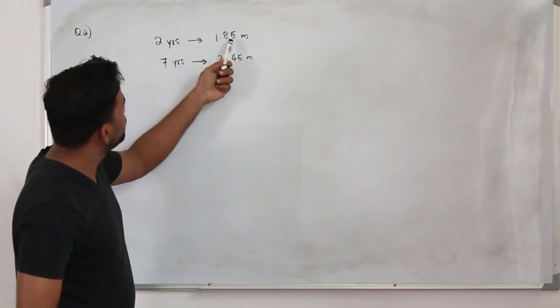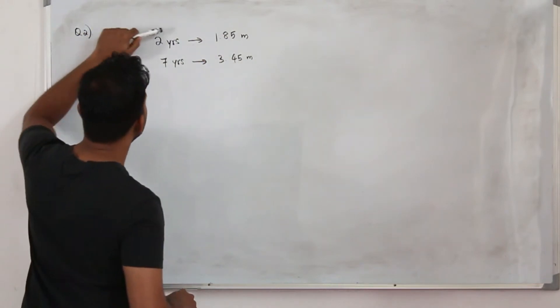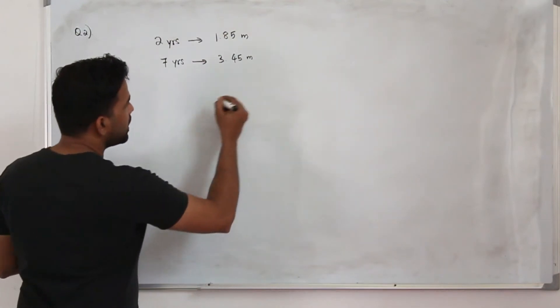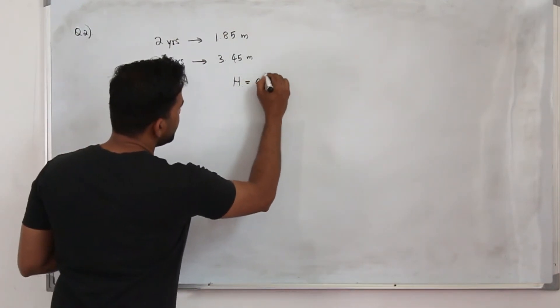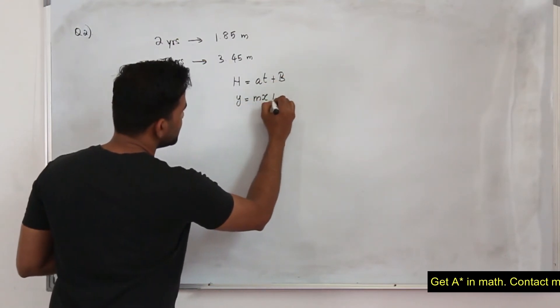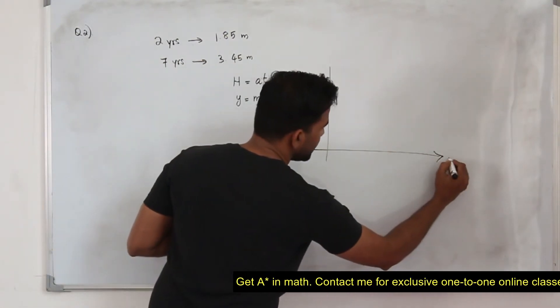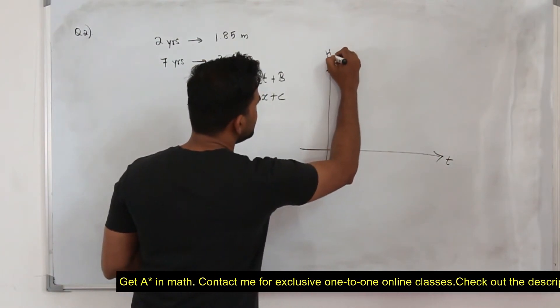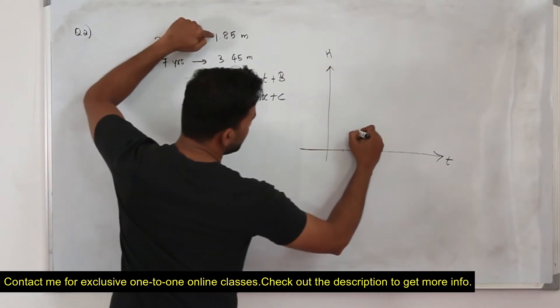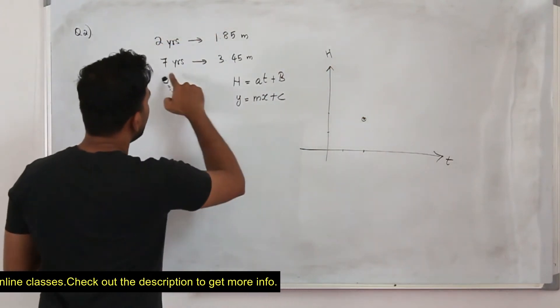The tree was 1.85 meters in two years, and in seven years the height was 3.45 meters. You are given this equation H equals at plus b, same like y equals mx plus c. If you plot a diagram, if you plot these points, take x-axis as t and this as H.